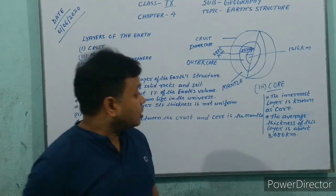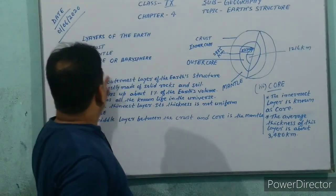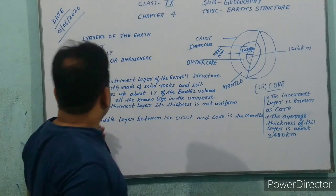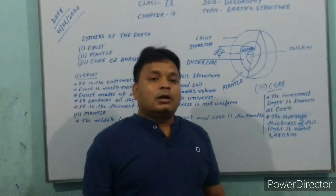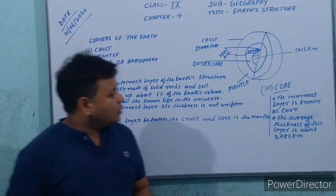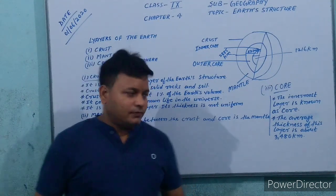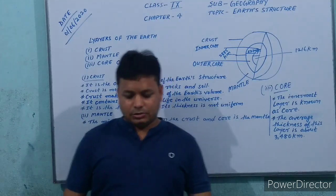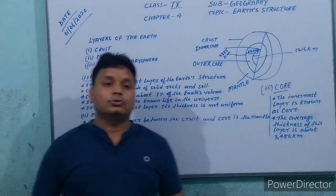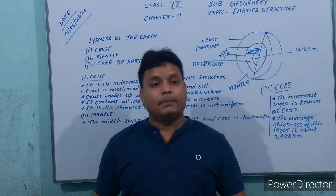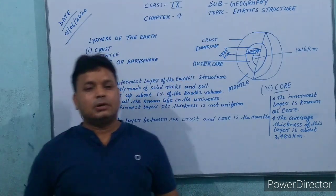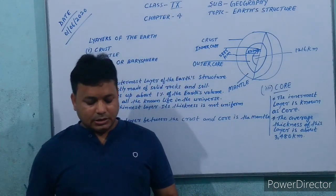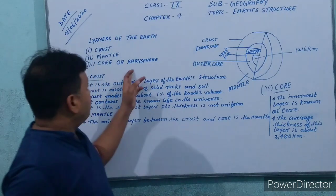Today I have discussed about the layers of the Earth: crust, mantle and core. Key terms: Crust — the outermost layer of the Earth, also known as the lithosphere. Mantle — the middle layer of the Earth. Core — the innermost layer of the Earth, also known as the barysphere or centrosphere.